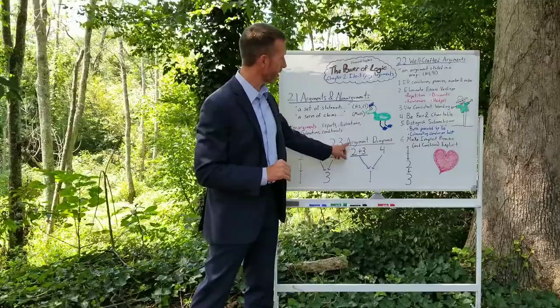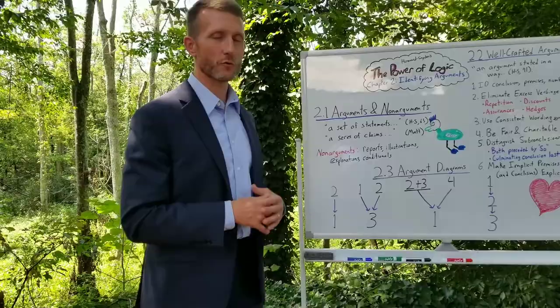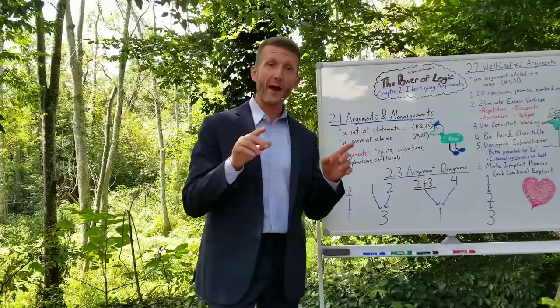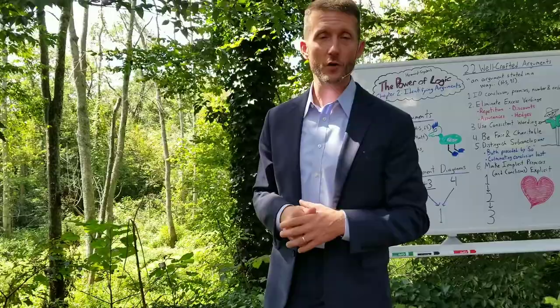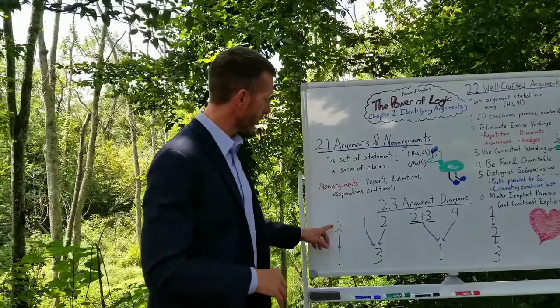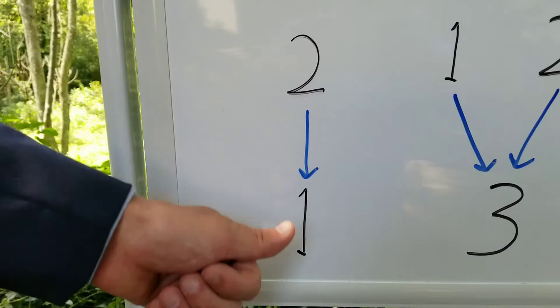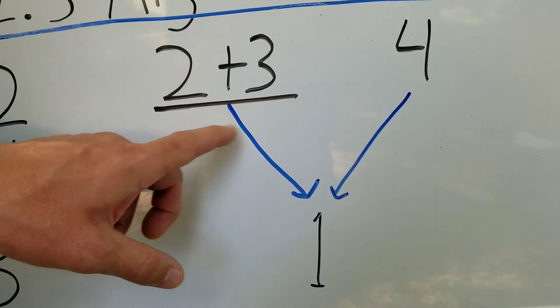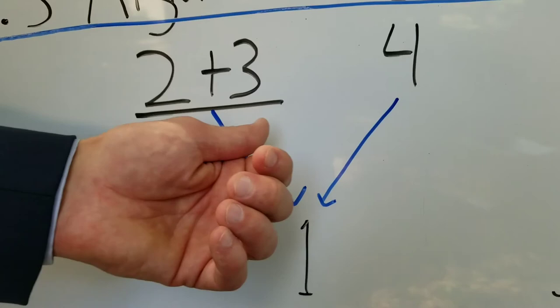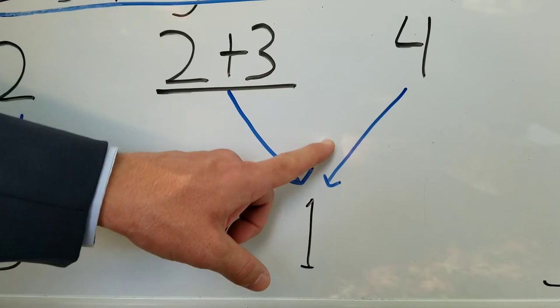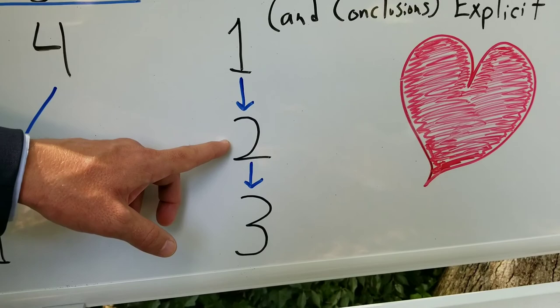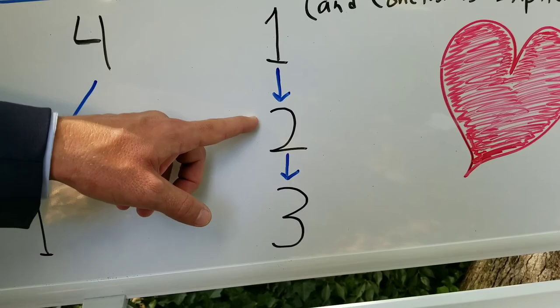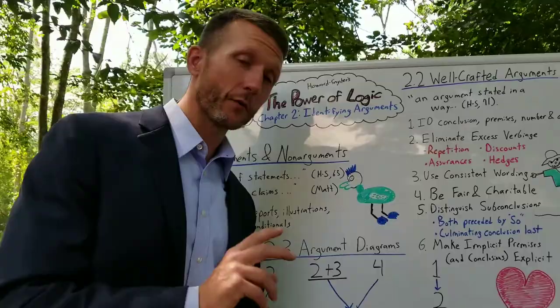Section 2.3: argument diagrams. Another technique that complements well-crafted arguments is diagramming. When you diagram an argument, you bracket the claims, assign numbers to them, and represent their internal logical workings with arrows, plus signs, underlinings, and other symbols. If a premise supports the conclusion directly, draw an arrow. If multiple premises work together to support the conclusion, use a plus sign and underline them to show they jointly support it. If there are sub-conclusions where an intermediate conclusion becomes a premise supporting the ultimate conclusion, draw an arrow to the sub-conclusion and put the ultimate conclusion at the very bottom.